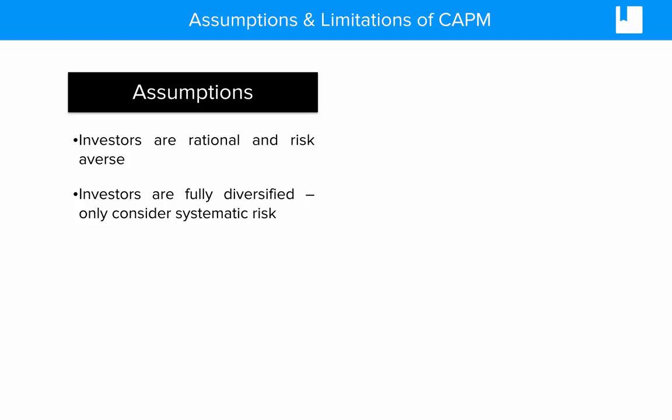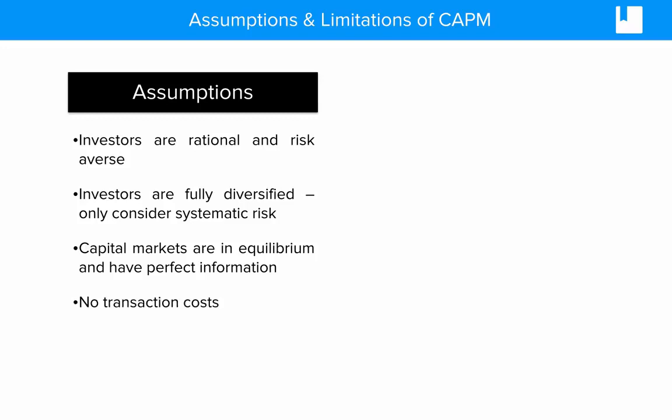We assume in the Capital Asset Pricing Model that all of the specific risk has been diversified away, so we're only left with systematic risk. We also assume that capital markets are in equilibrium, so that our expected returns on portfolios should sit on the capital market line or the SML, the security market line, and that investors and the markets have perfect information.